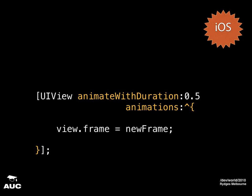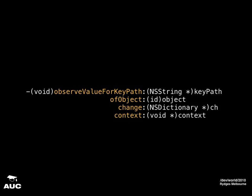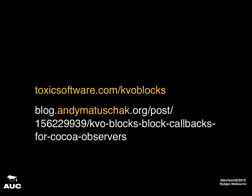Blocks also make key value observing easier. Normally you have to implement observeValueForKeyPath:ofObject:change:context: every time you observe a property, resulting in a massive if statement for each object and key combination. Two separate projects exist for making KVO work with blocks: the KVO Blocks project at toxicsoftware.com, and one on Andy Matuszczak's blog. They basically do the same thing and are really cool — I strongly suggest you use them.